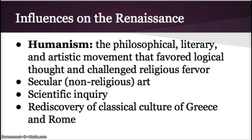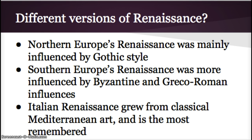Humanism favored secular, non-religious art and scientific inquiry, and was about rediscovering the classical culture of Greece and Rome. The Northern European version of the Renaissance was highly influenced by Gothic style, while Southern Europe was influenced by Byzantine and Greco-Roman influence. An example of Byzantine work was by Italian painter Giotto di Bondone and his painting Lamentation. Italian Renaissance grew from classical Mediterranean art and is the most remembered today.